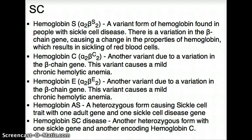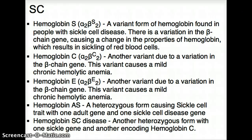One more thing to mention: in beta thalassemia, there is an increased amount of hemoglobin A2 and hemoglobin F that is predominantly found. Beta thalassemia cannot produce any kind of RBCs that are remotely functional, so they make so much HbA2 and HbF that it's very apparent — this is usually seen in beta thalassemia. So that's all about thalassemias.